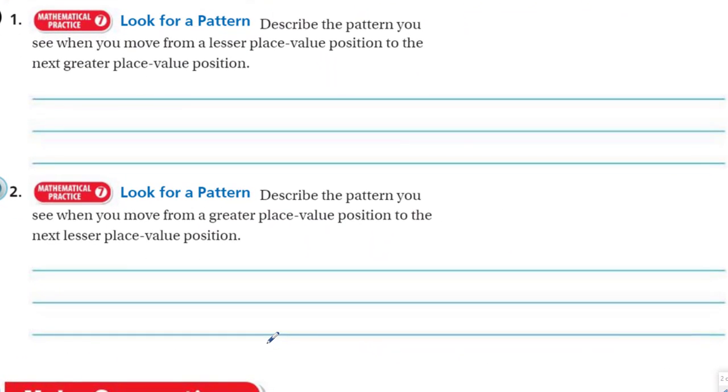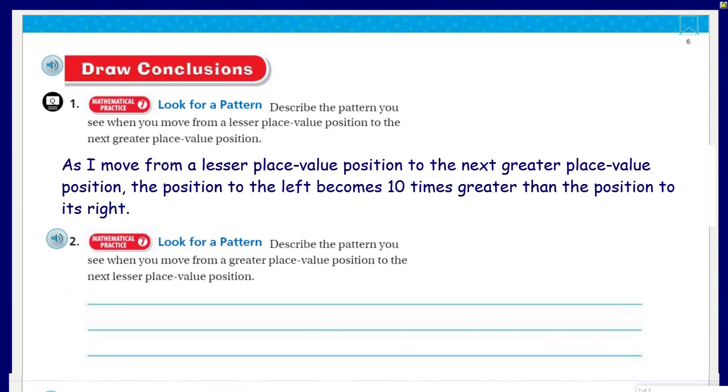Now let's move on to the next page. This is where we have to really be thinking - mathematical practice 7, look for a pattern. Describe the pattern you see when you move from a lesser place value position to the next greater place value position. So as we're moving from a lesser place value, let's start at the small cube, the ones place. If we move to the next greater place value, we can see that the value is going to be increased by a power of 10, 10 times as much.